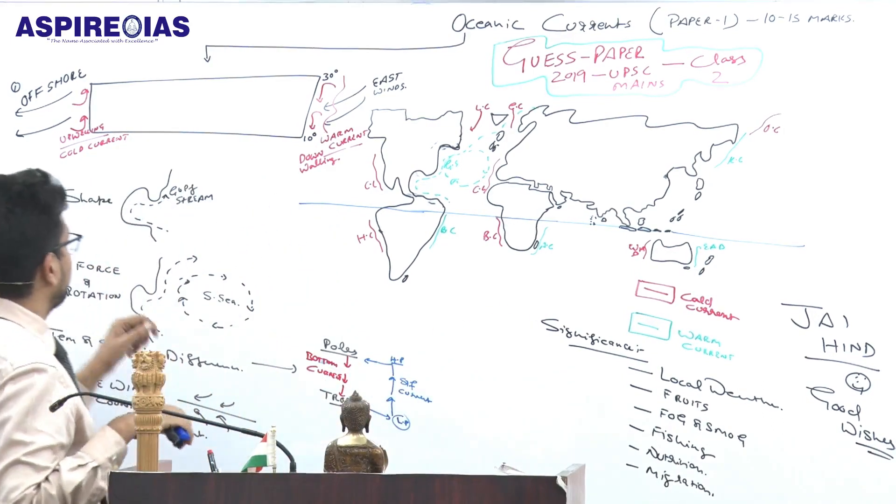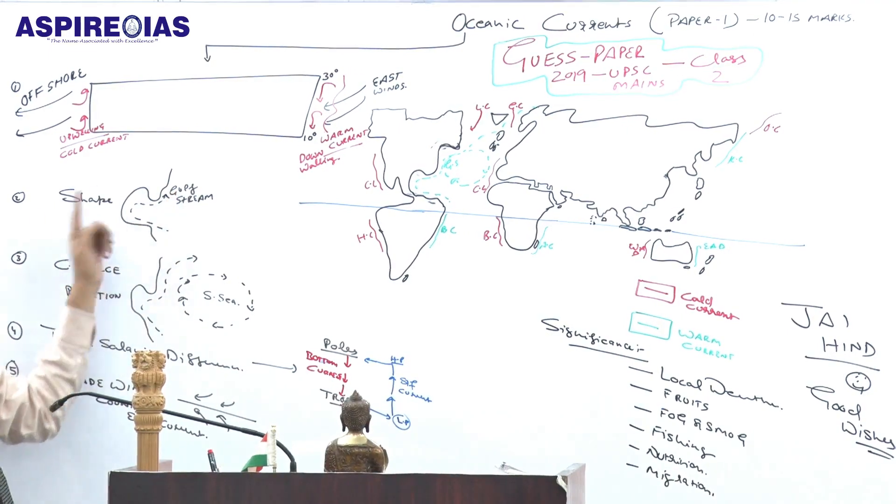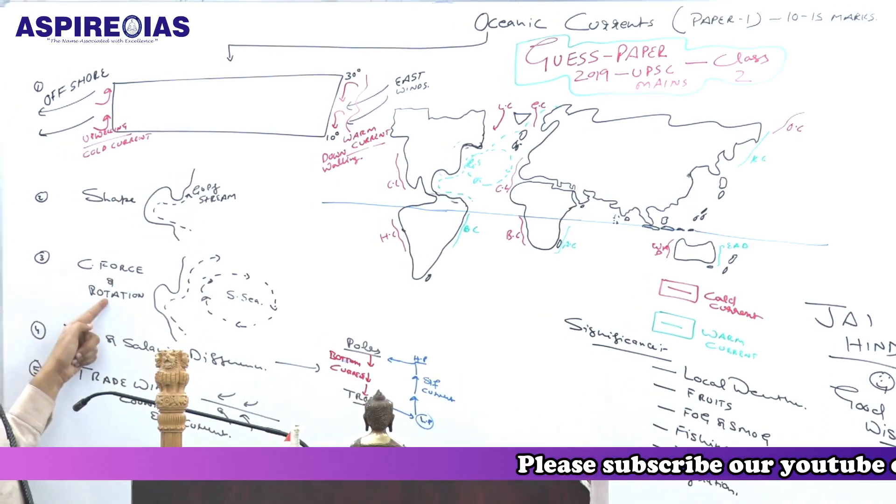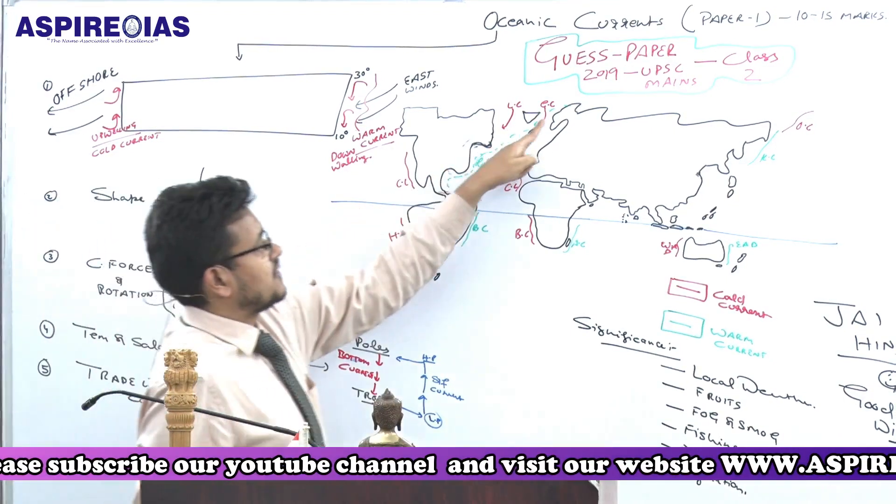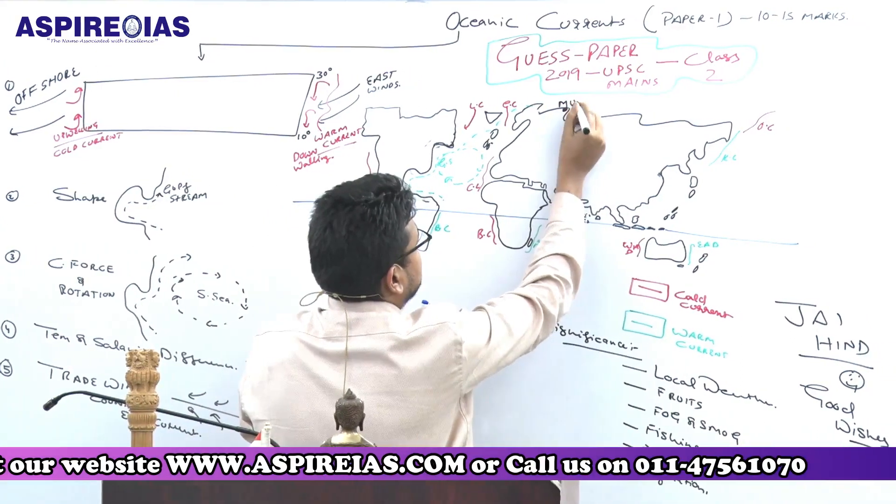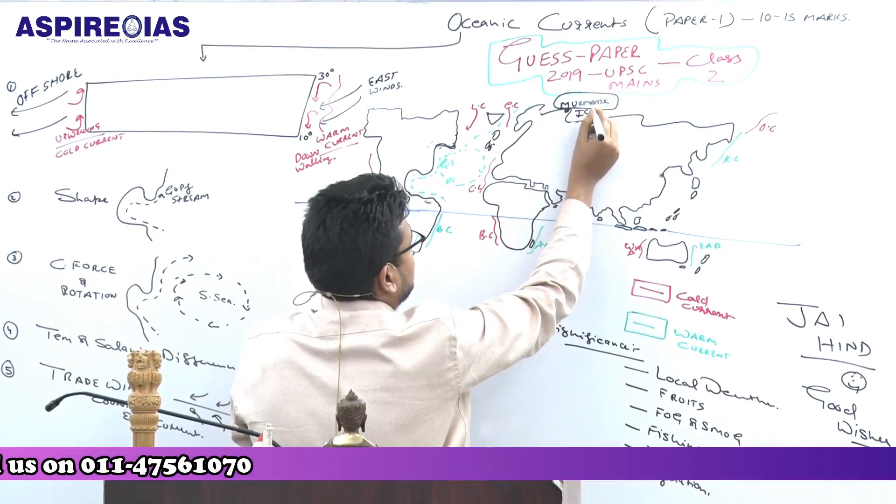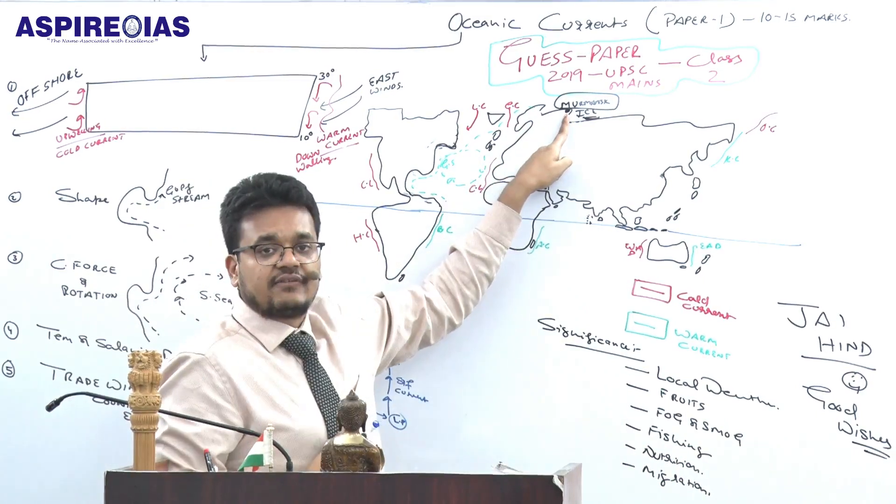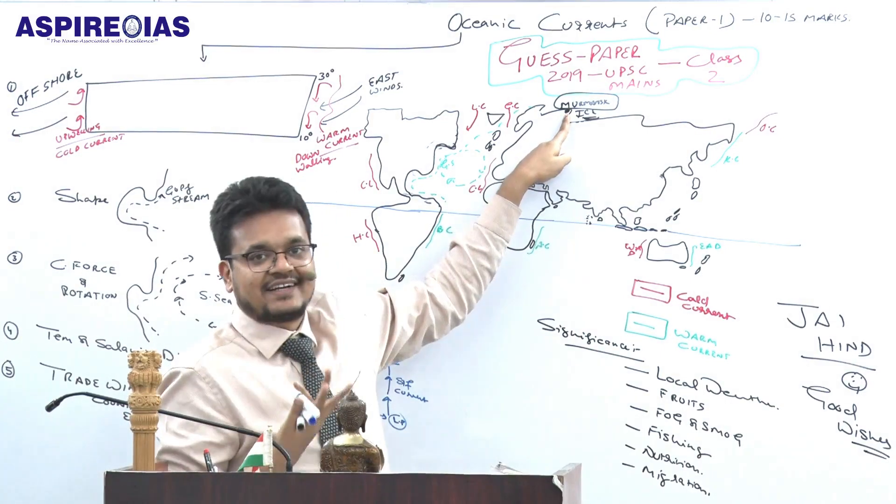The second factor is the shape of the continent. Gulf Stream is an example. Coriolis force and rotation result in Gulf Stream movement creating the Sargasso Sea. The same Gulf Stream comes to Europe and Russia. Russia's port of Murmansk is ice-free throughout the year only because of Gulf Stream, which is why Russia is developing this port as a naval base, showing the geostrategic significance of oceanic currents.